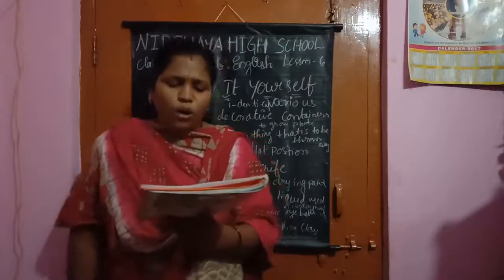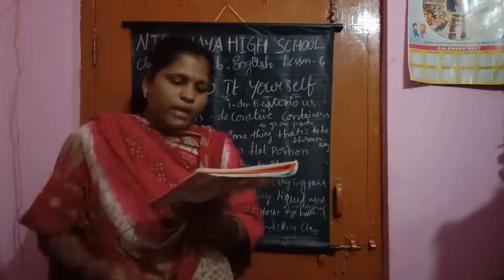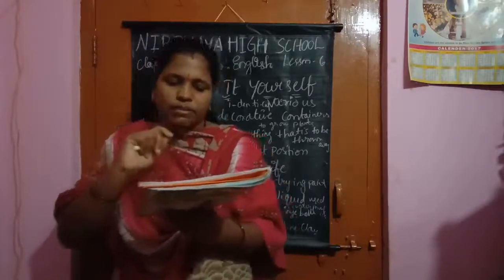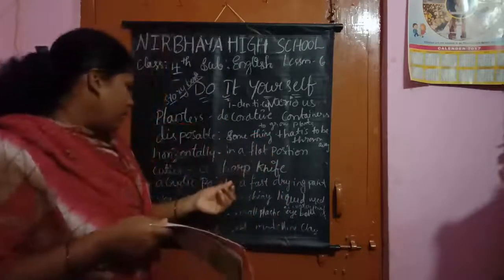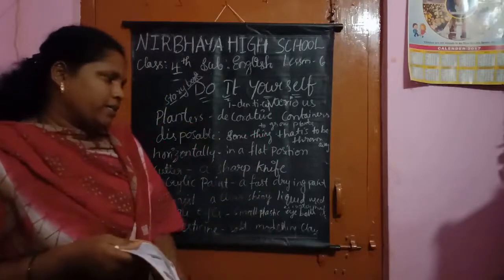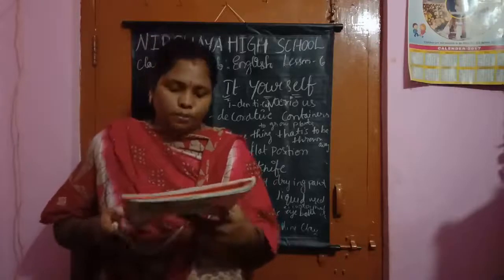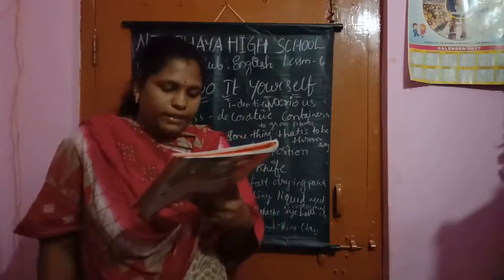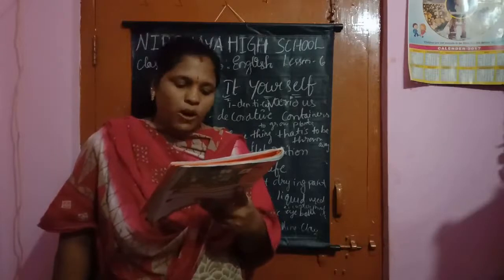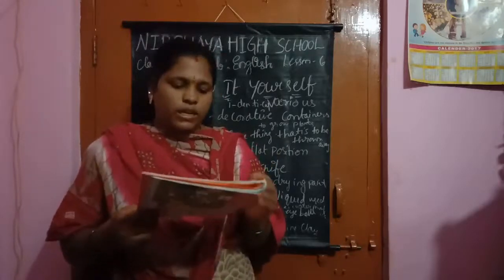'Make Your Own Kitchen Garden.' Things you need: plastic bottle, acrylic paint — a fast-drying waterproof paint — varnish, cutter, strong jute rope, soil and seeds. These are the things you need.